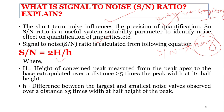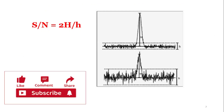Signal-to-noise ratio is calculated as: S/N = 2H / h, where H is the height of the peak of concern, measured from the peak apex to the extrapolated baseline over a distance greater than or equal to 5 times the peak width, and h is the difference between the largest and smallest noise values observed over a distance greater than 5 times the peak width at half height.